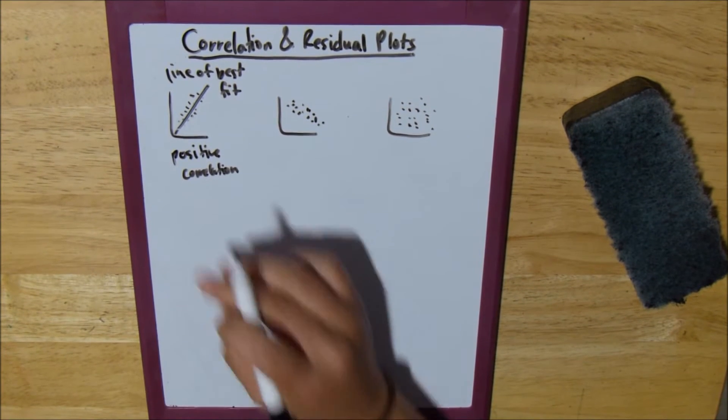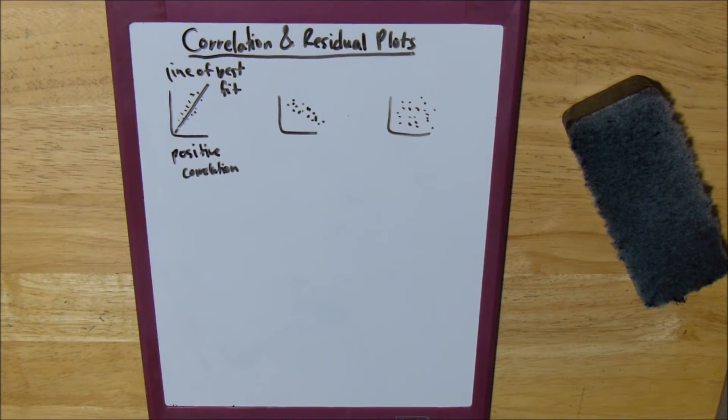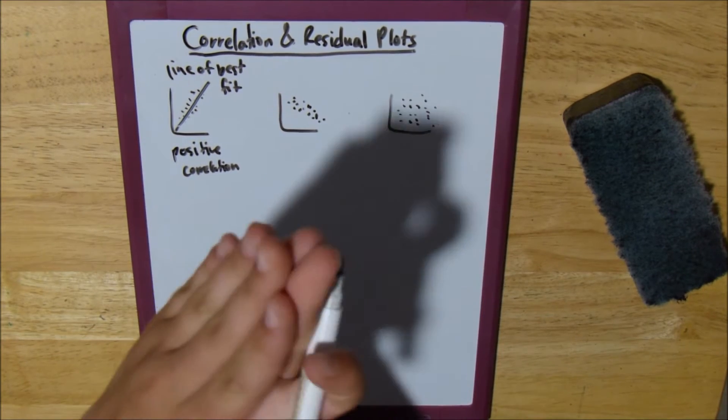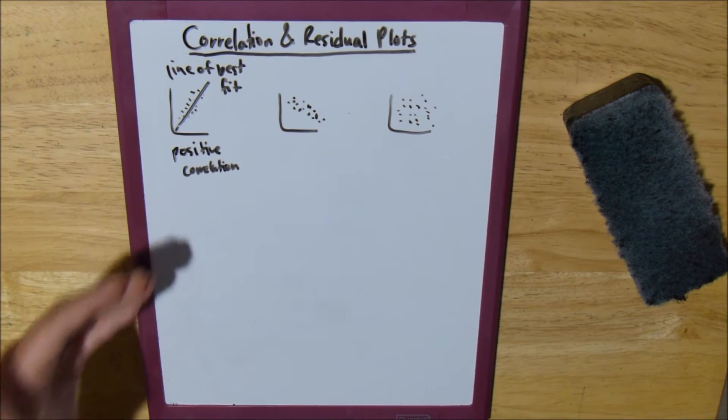And our line of best fit has a positive slope and all the points are moving up in a positive way, so we call that positive correlation.